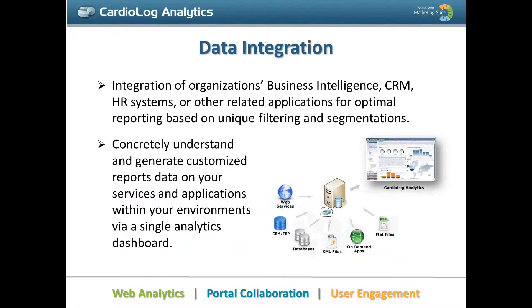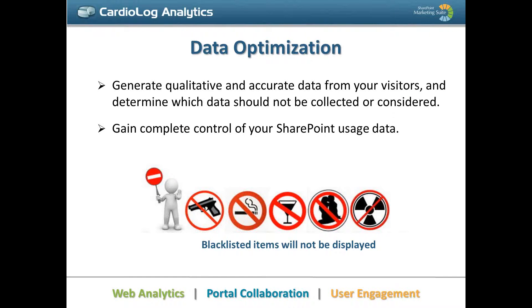After data integration, let's jump to data optimization. The best part of enhancing your portal is understanding what you have to exclude — take the most valuable information and exclude the noisy information. What we help you do in optimization is create specific blacklists. Cardiolog and SharePoint Analytics and SharePoint Marketing Suite offer you to create blacklists for specific segments and features, but here you can create a blacklist for any feature, any data, any user, anything not included out of the box. We help you understand which data is not so valuable that you don't need to collect in your report, in order for you to get the most valuable data and get complete control of your SharePoint usage data.